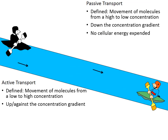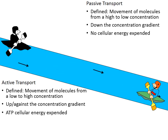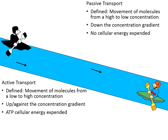Passive transport requires no cellular energy, no ATP. But during active transport, cells must spend ATP — the energy of the cell — in order to perform active transport.